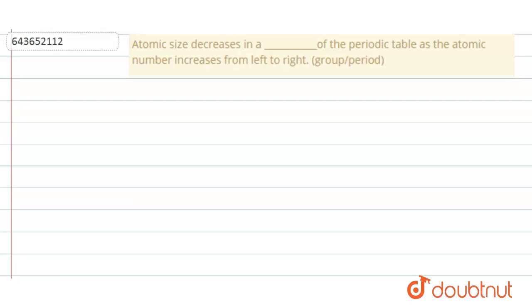Hi students, we have a question here. Atomic size decreases in a dash of the periodic table as the atomic number increases from left to right.